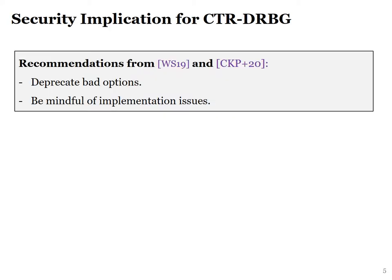The lessons learned from these two papers are: first, you should deprecate insecure options in Counter-DRBG. Next, if you are a developer, you should be mindful of misuse such as using leaky table-based AES, or failure to refresh the state periodically, or using low-entropy input.